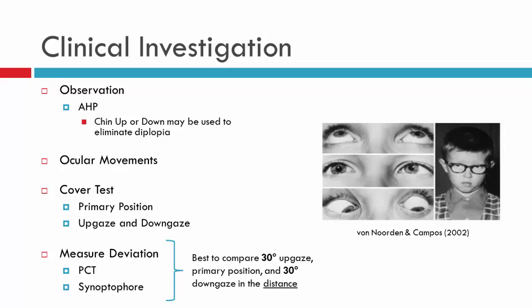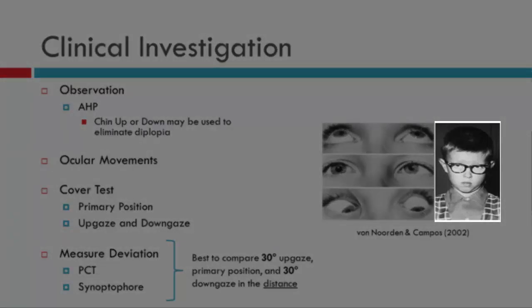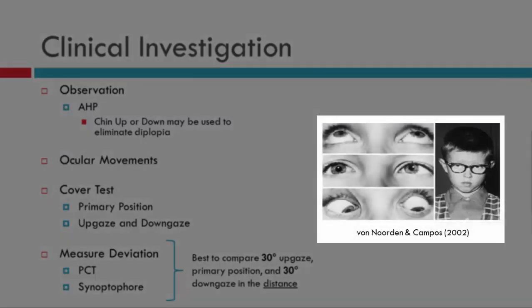One of the first things you'll do in your clinical examination is observe if there is an abnormal head posture. In relation to alphabet patterns, patients will generally have a chin up or chin down to accommodate or provide themselves with BSV in a particular position. Looking at the patient here, we can see that in primary position they prefer to adopt a chin down position, wanting their eyes up. In primary position we have an iso; in down gaze, an increase in the iso; in up gaze, a decrease in the iso.